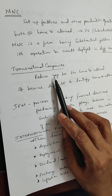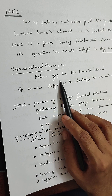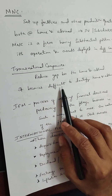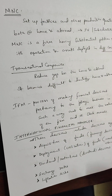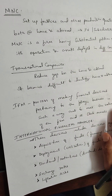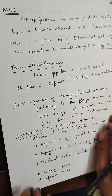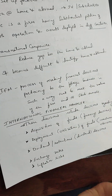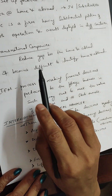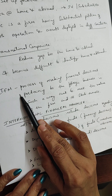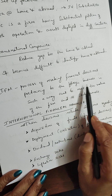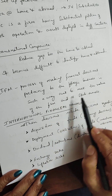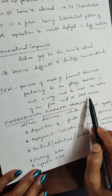Transnational companies reduce the gap between home and abroad, making it difficult to identify which is the home country. The product and organization are environmentally fit. International financial management is the process of making financial decisions pertaining to foreign business in such a way as to maximize the value of the firm and its stockholders.